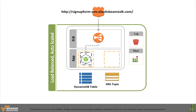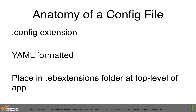Your Beanstalk environment doesn't automatically come with a DynamoDB table or an SNS topic — we'll call this a resource customization. You can easily customize resources in Elastic Beanstalk with configuration files. A configuration file is a file with a .config extension. It is YAML formatted, and it declares other AWS resources you want created along with your application. You save the configuration file in a folder named .ebextensions at the top level of your application.